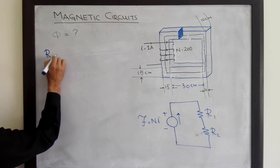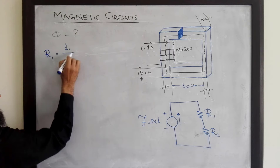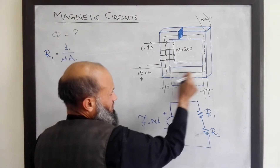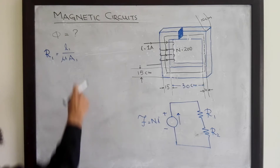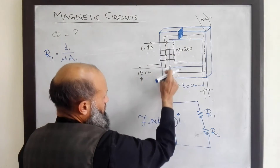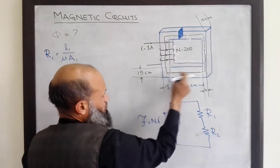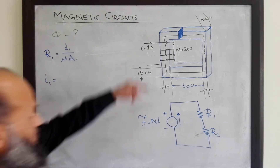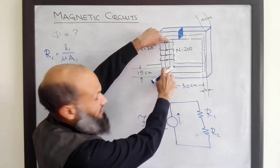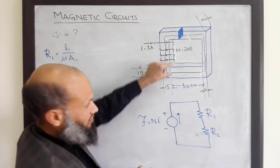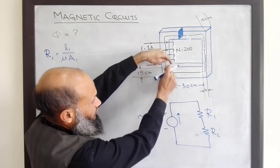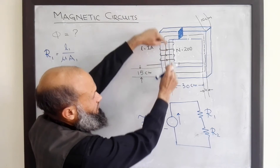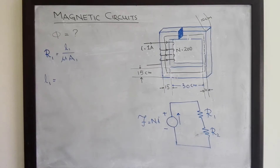R1 is the reluctance of the first part of the core, given by R1 = L1 / (mu × A1). L1 is the total mean path length of that portion. This length is 30 centimeters, plus 7.5 on each side, giving 45 centimeters for one section. The other sections give 42.5 and 42.5. So L1 equals 45 plus 85, totaling 130 centimeters, which we divide by 100 to convert to meters.